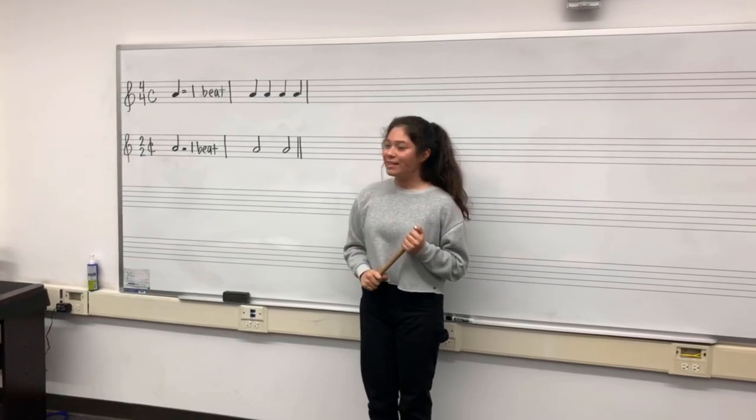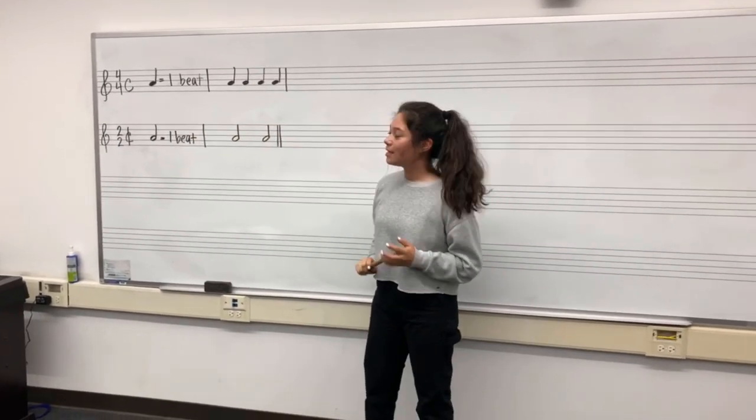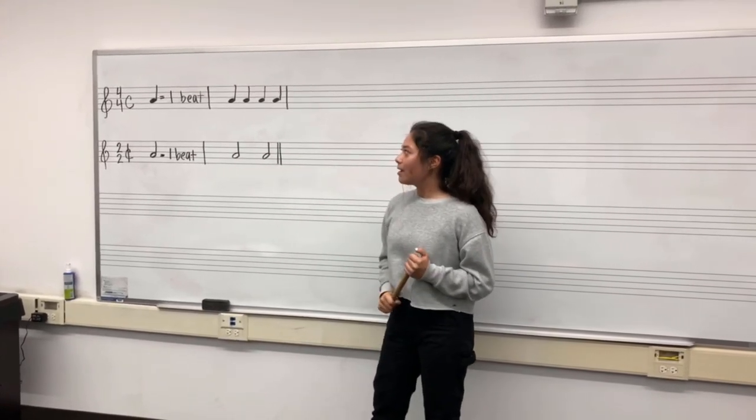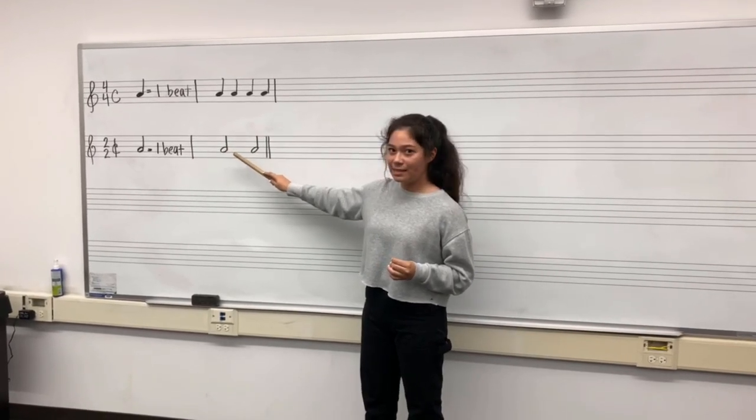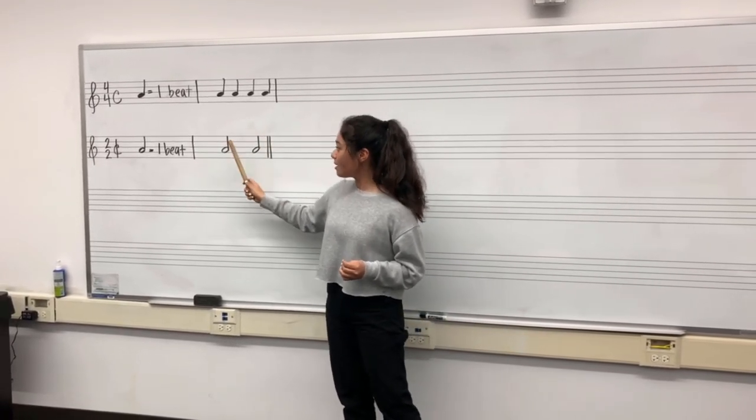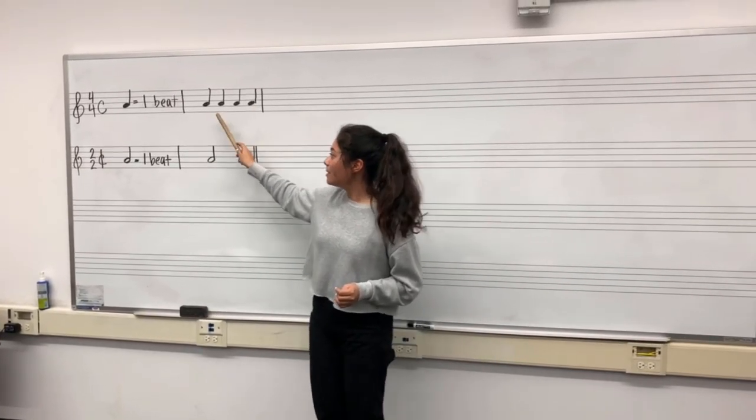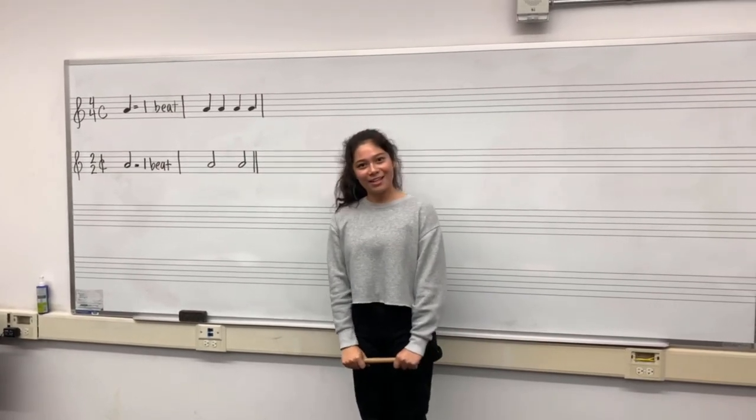And what that means, basically, is instead of four beats per measure, which you see here with the four quarter notes, it's two beats per measure, which you see here with the two half notes. And the notes in cut time are extended. So instead of the half notes being two beats, like in common time, it's one beat instead. And that's cut time.